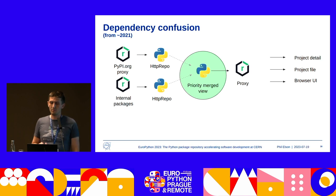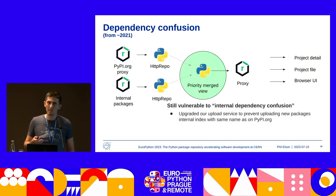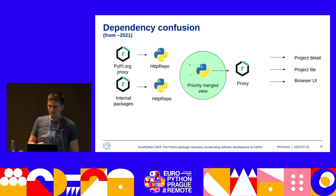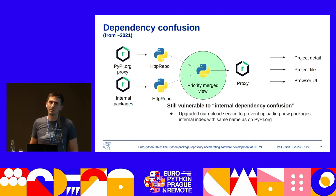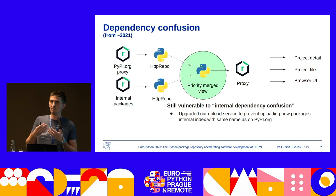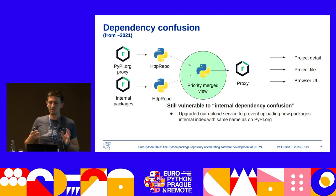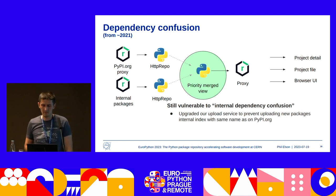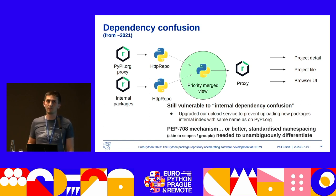Focusing on this priority merge view: the idea is basically that if on my internal index I've got a package and another version exists on pypi.org, we only take the one from the internal index — pretty simple. But it's still vulnerable to something I call internal dependency confusion, which is the opposite of dependency confusion. If I have a package on pypi.org and then upload it to my internal index with a greater version, the priority merge gives me the internal one, not the external one. Imagine someone uploaded NumPy that way — you've still got some problems. It's pretty uncomfortable.